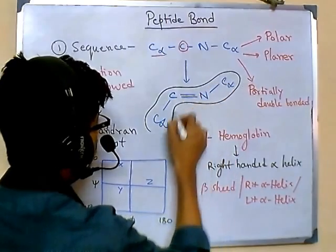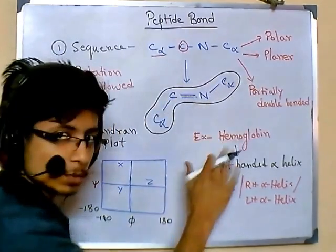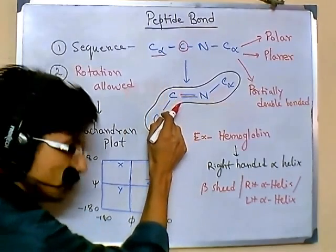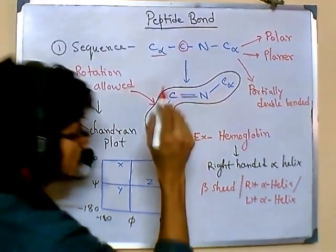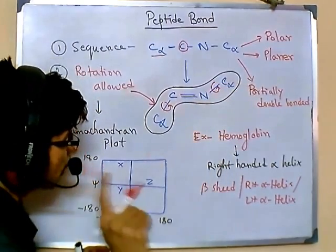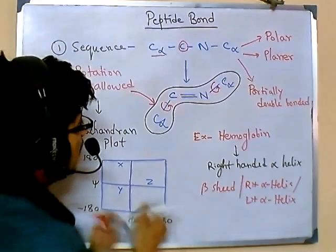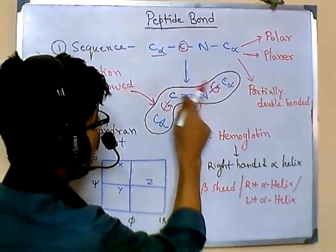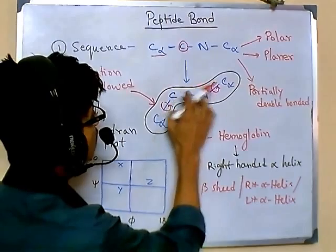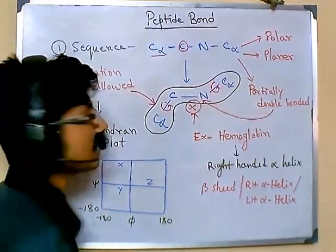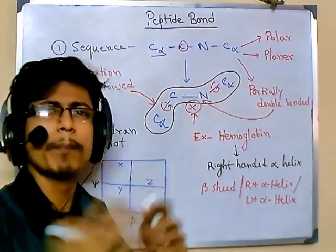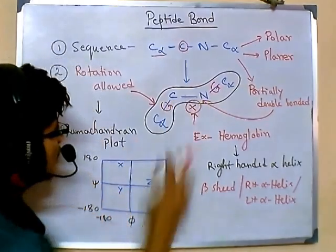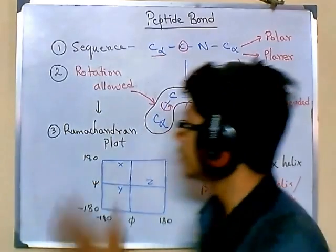Looking at the bond sequence Cα–C–N–Cα: rotation around C–Cα and N–Cα is allowed, but rotation around the C–N bond is not possible. Although it appears to be a single bond, it has partial double bond character, which is why rotation around C–N is restricted.